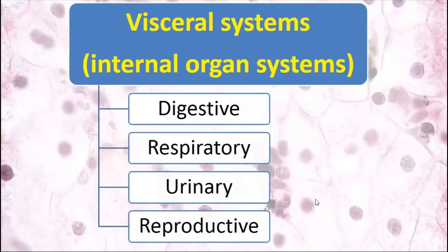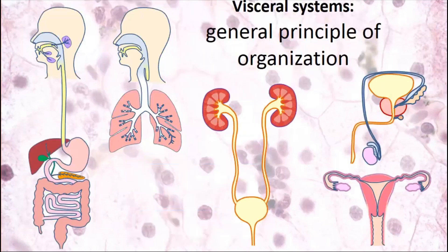During this and the previous semester, we have studied different systems of our body: visceral systems, regulatory systems, and somatic systems. We studied visceral or internal organ systems, which include digestive, respiratory, urinary, and reproductive. We found they have a lot of similarities. Those organs may be divided into two groups: hollow or luminal organs, which have a cavity and wall with a layered structure, and parenchymal or solid organs, which haven't those luminal structures — they have solid tissue instead.